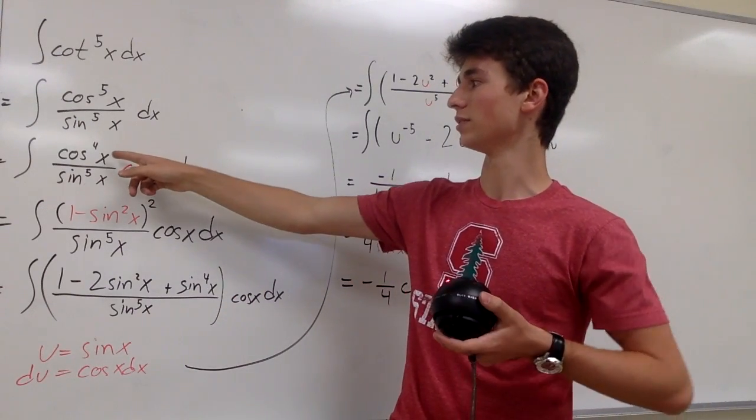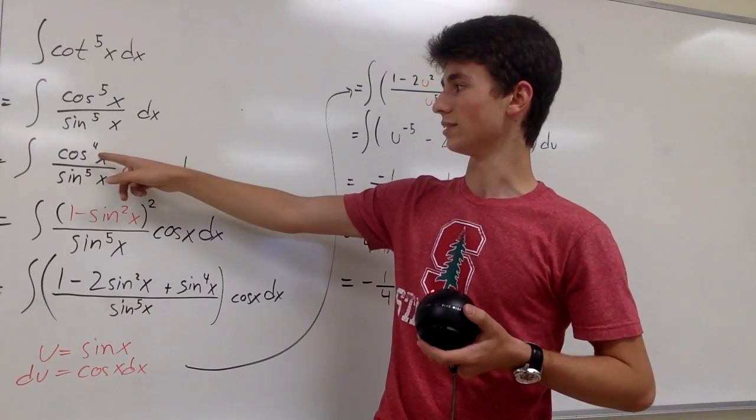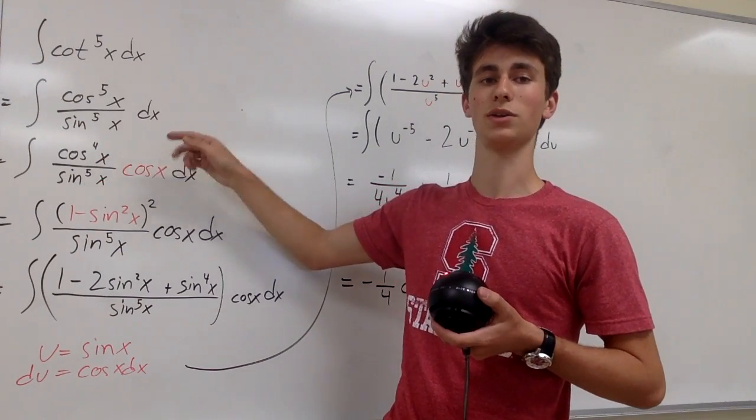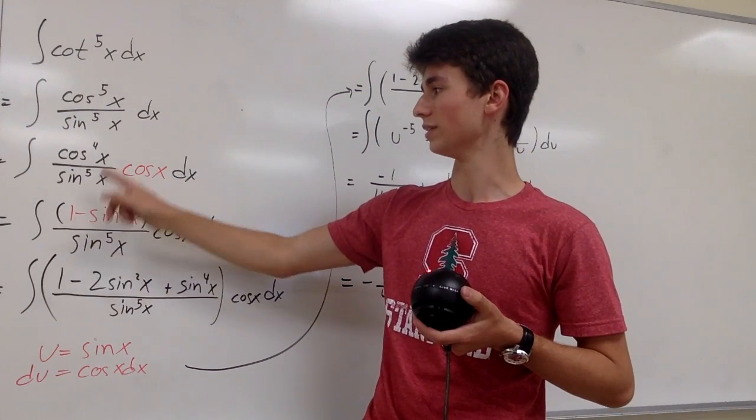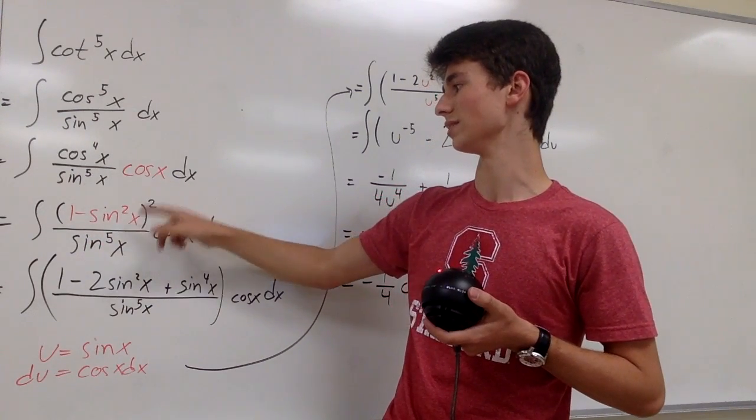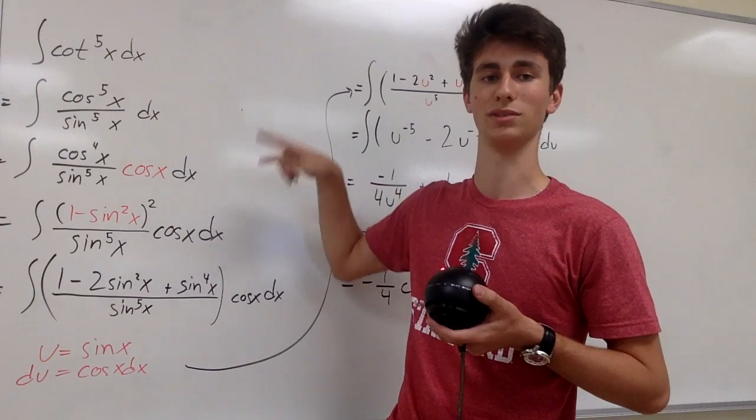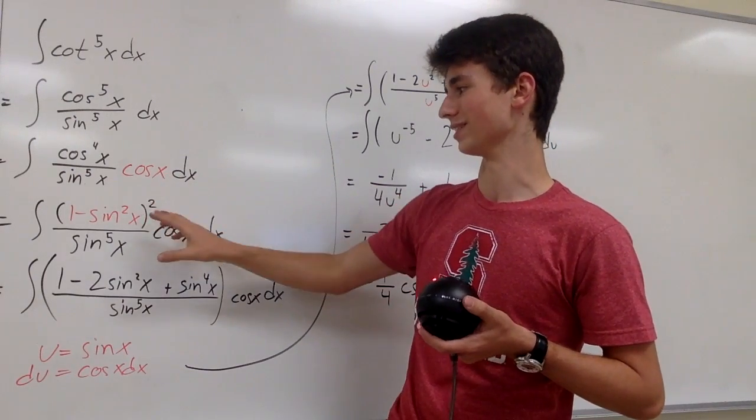We can use the identity for cosine squared of x, since this cosine to the fourth of x is cosine squared squared, which is equal to one minus sine squared of x. And since it's cosine squared squared, we square that result.